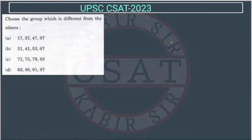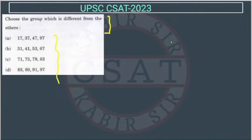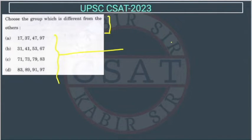See this question: choose the group which is different from the others. In this we have to tell which group is different. I have seen many students — they were not able to solve this and they were trying to find a relationship between the terms. If you look, there are lots of possible relationships. There are four options and in every series we have four numbers.